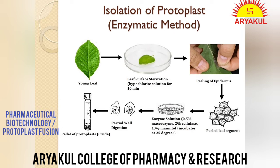Leaf ko sterilize kiya, epidermis nikala. Ab yeh peeled segment ko enzyme solution mein rakh dete hain. Jaise cell wall mein cellulose hota hai to hum cellulase ka istemal karte hain; pectin hota hai to pectinase ka istemal karte hain, taaki cell wall poori tarah enzymatically hat jaye. Leaf ko chhote tukdon mein kaat kar petri dish mein enzyme solution mein — jismein enzyme bhi ho aur plasmo-liticum bhi — rakh ke incubate karte hain. Cell wall ka digestion ho jata hai. Petri dishes ko seal karke paraffin se wrap karte hain aluminium foil ke saath.